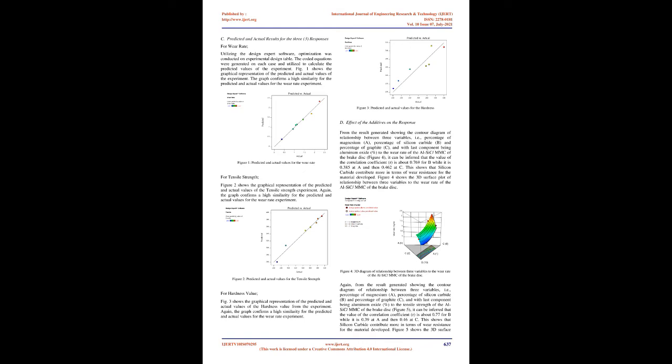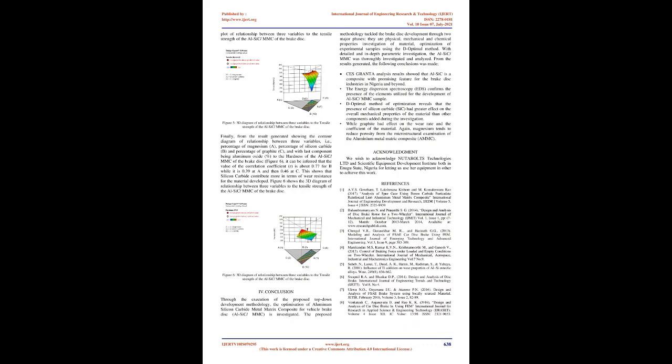Predicted and actual results for the three responses: Wear rate — utilizing the Design Expert software, optimization was conducted on the experimental design table. The coded equations were generated for each case and utilized to calculate the predicted values. Figure 1 shows the graphical representation of the predicted and actual values for the wear rate experiment, confirming a high similarity between them. Figure 2 shows the graphical representation of the predicted and actual values of the tensile strength experiment, again confirming a high similarity. Figure 3 shows the graphical representation of the predicted and actual values of the hardness values from the experiment, again confirming a high similarity between the predicted and actual values.